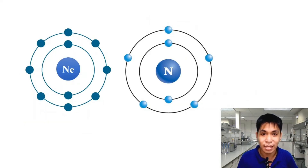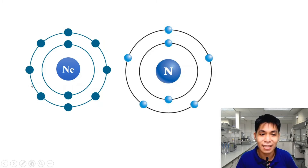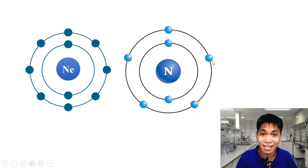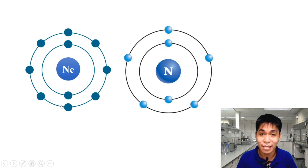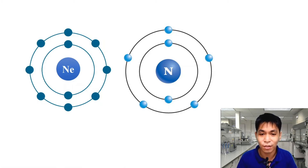Let's apply that idea with two atoms: neon and nitrogen, both in their monoatomic form, meaning they are not combined with any other atom. Neon has 8 valence electrons on its outermost shell, while nitrogen has only 5 valence electrons. Following the Octet Rule, neon is a stable atom, but nitrogen is not. Since neon has 8 valence electrons in its monoatomic form, neon belongs to the noble gases. Nitrogen does not.